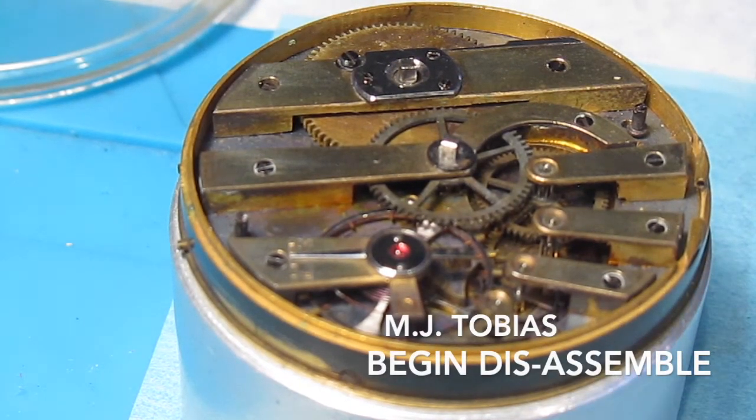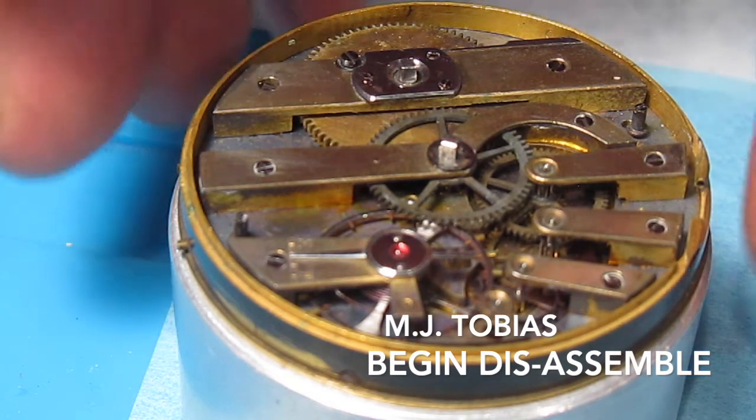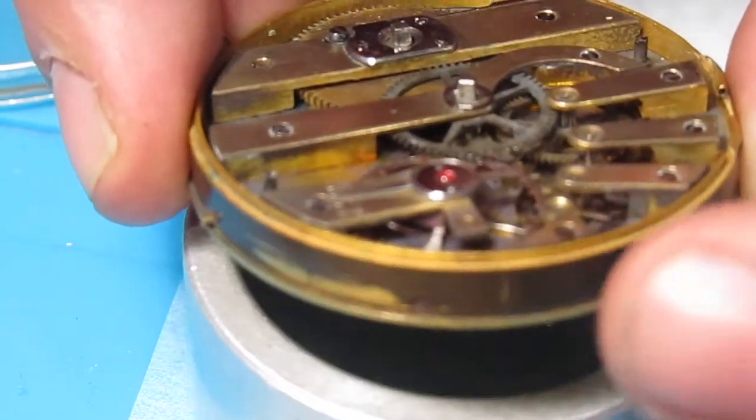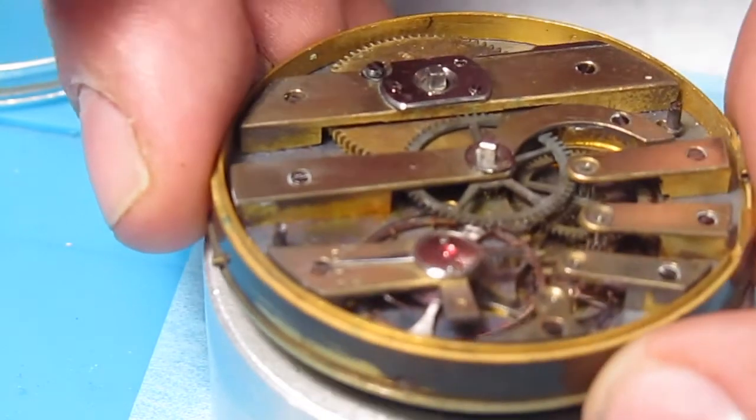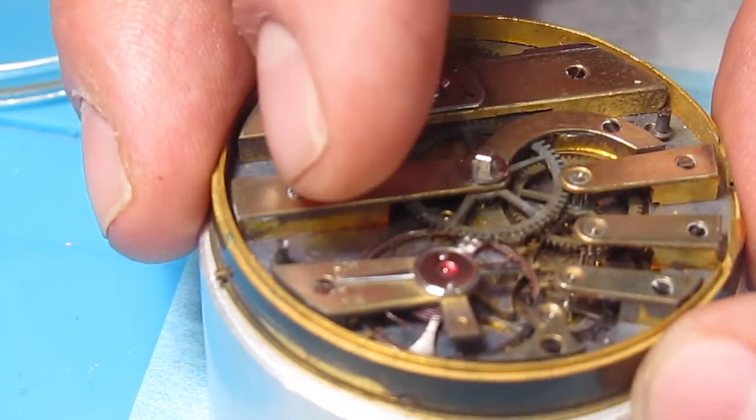Welcome back again. Right now we're going to take off the ring that surrounds the entire movement so that we can take off the balance wheel.